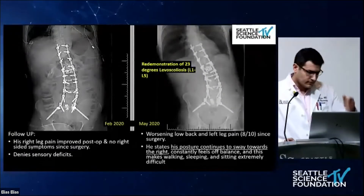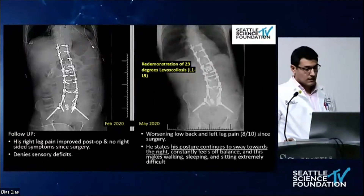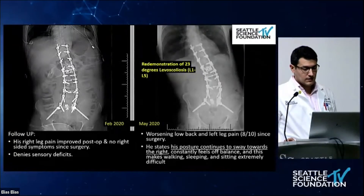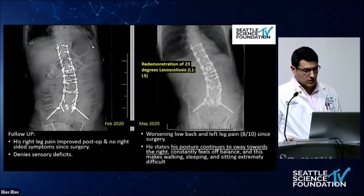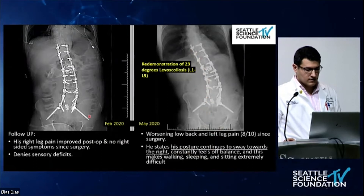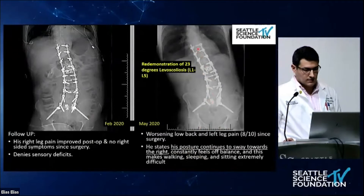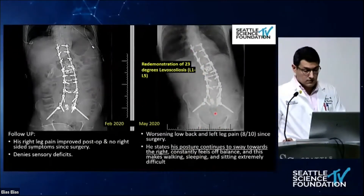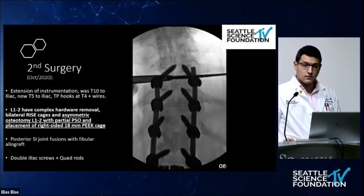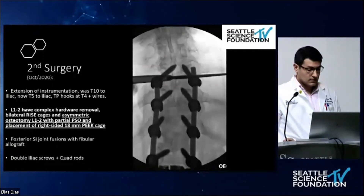On follow-up directly post-op, the patient reported that his right leg pain improved significantly and he no longer reported right-sided symptoms. He denied the sensory deficit he had before surgery. However, three months post-op, he started complaining again of low back pain and severe left leg pain. He stated that his posture was tilting more and more towards the right side. The x-ray at three months shows increased degrees of levo-scoliosis.